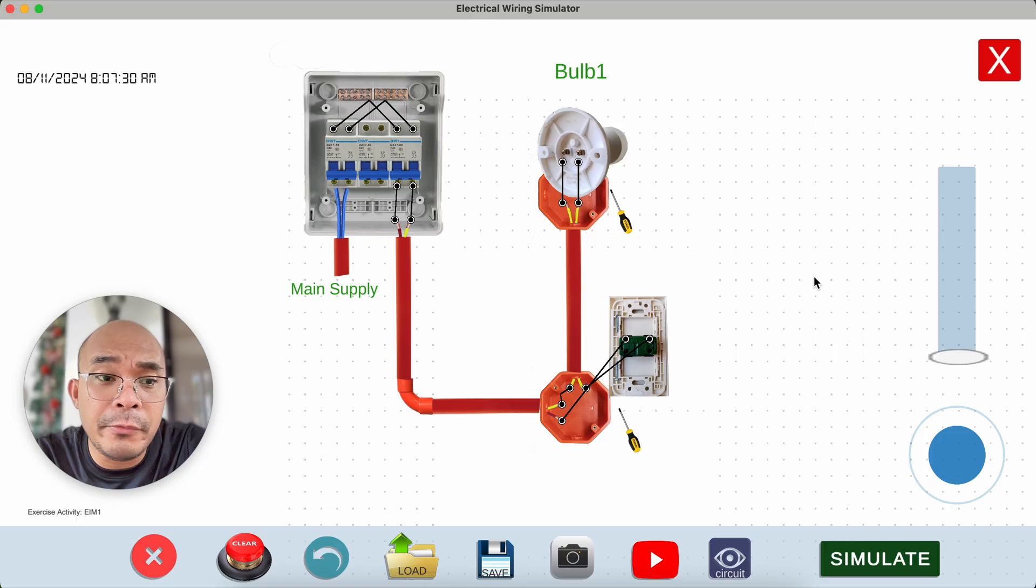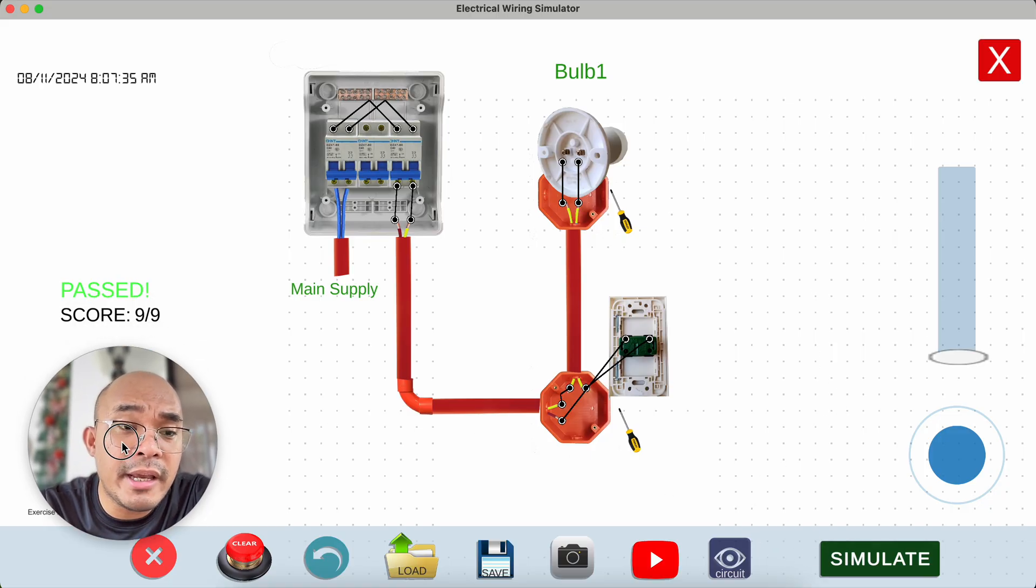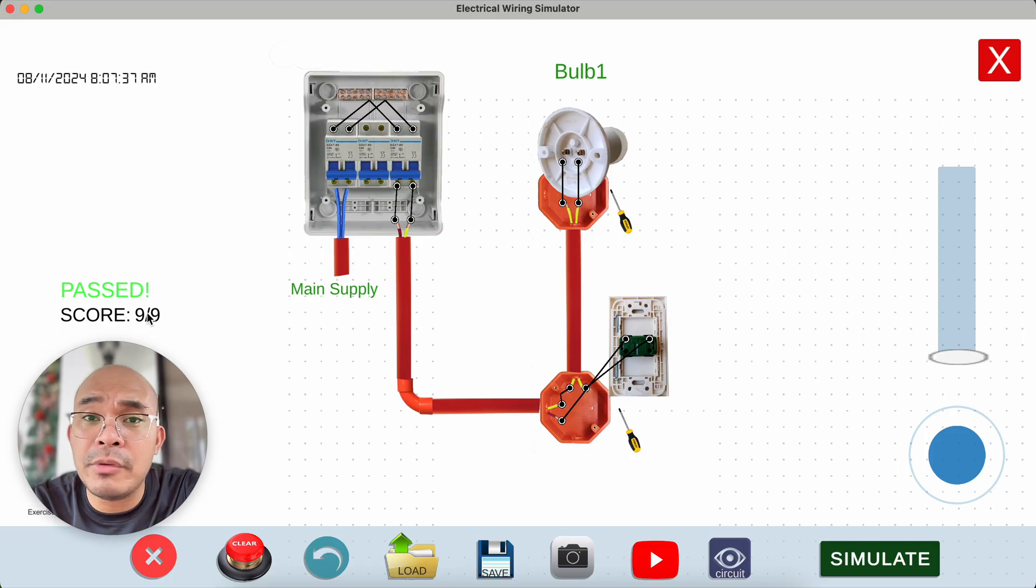Let's try to test it if we got the correct wiring based on the diagram that we have here. It says here, passed, 9 over 9. Basically, we have 9 wires in this particular activity. If it is already passed, we can already start the simulation.